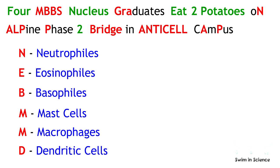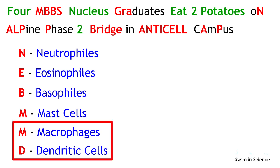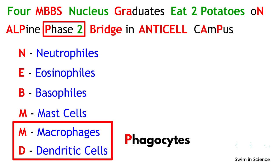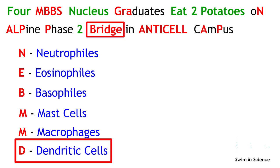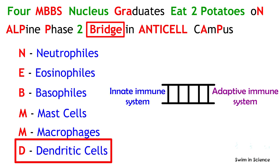The remaining two cells of the innate immune system — macrophages and dendritic cells — are also phagocytic in nature, which is represented by 'phase two.' The term 'bridge' indicates that the dendritic cell acts as a bridge between the innate and adaptive immune systems.